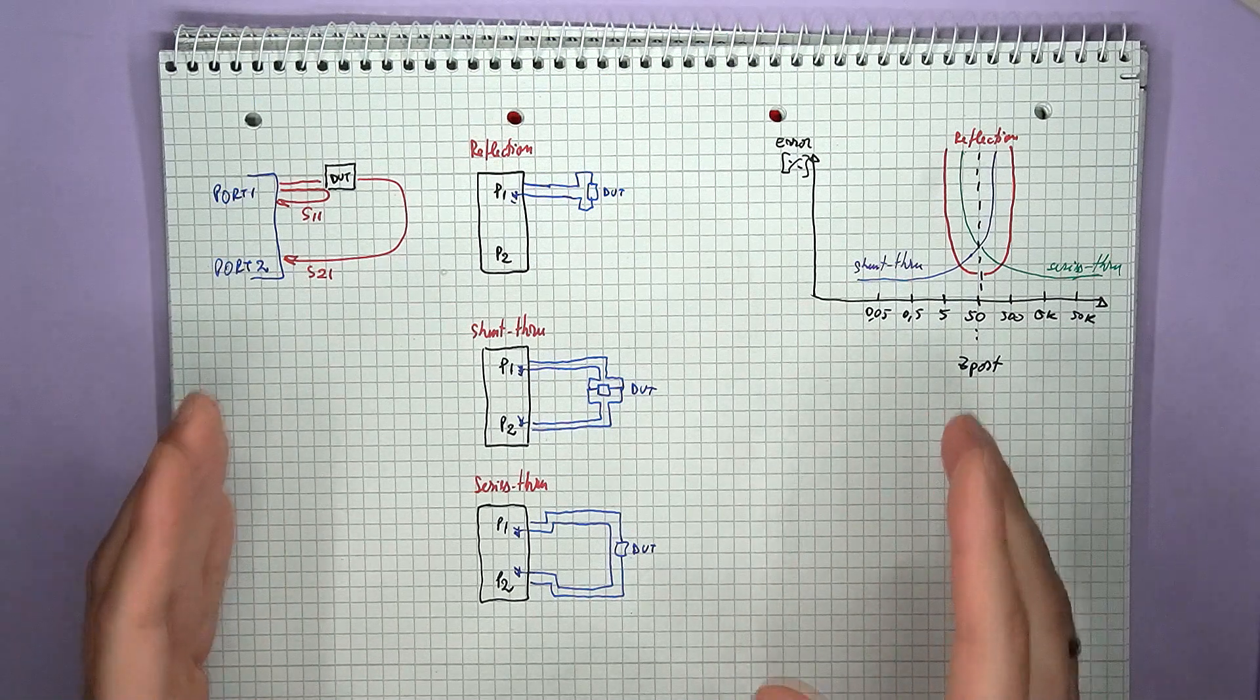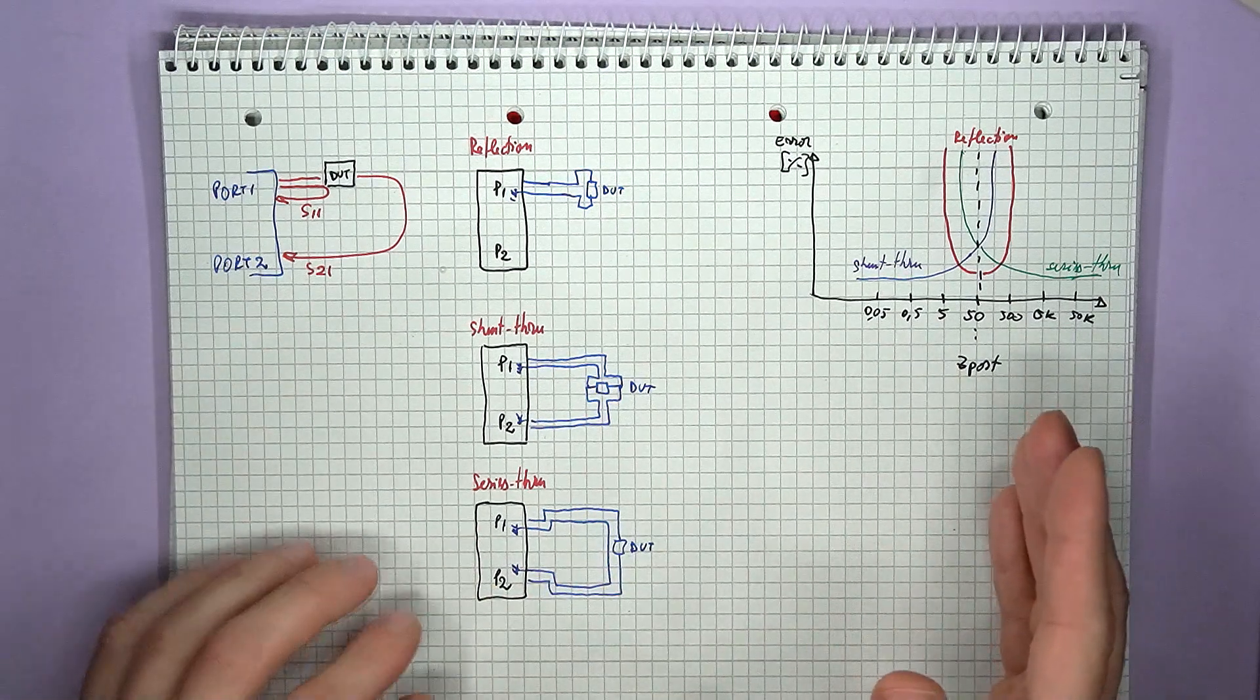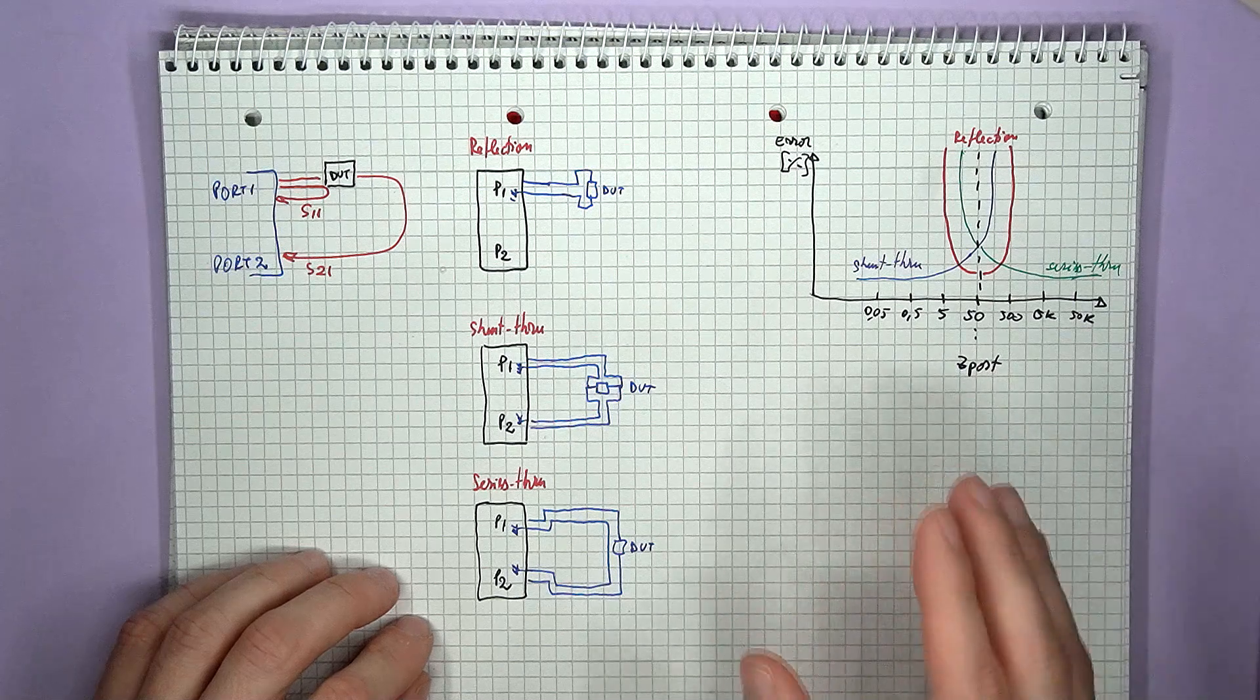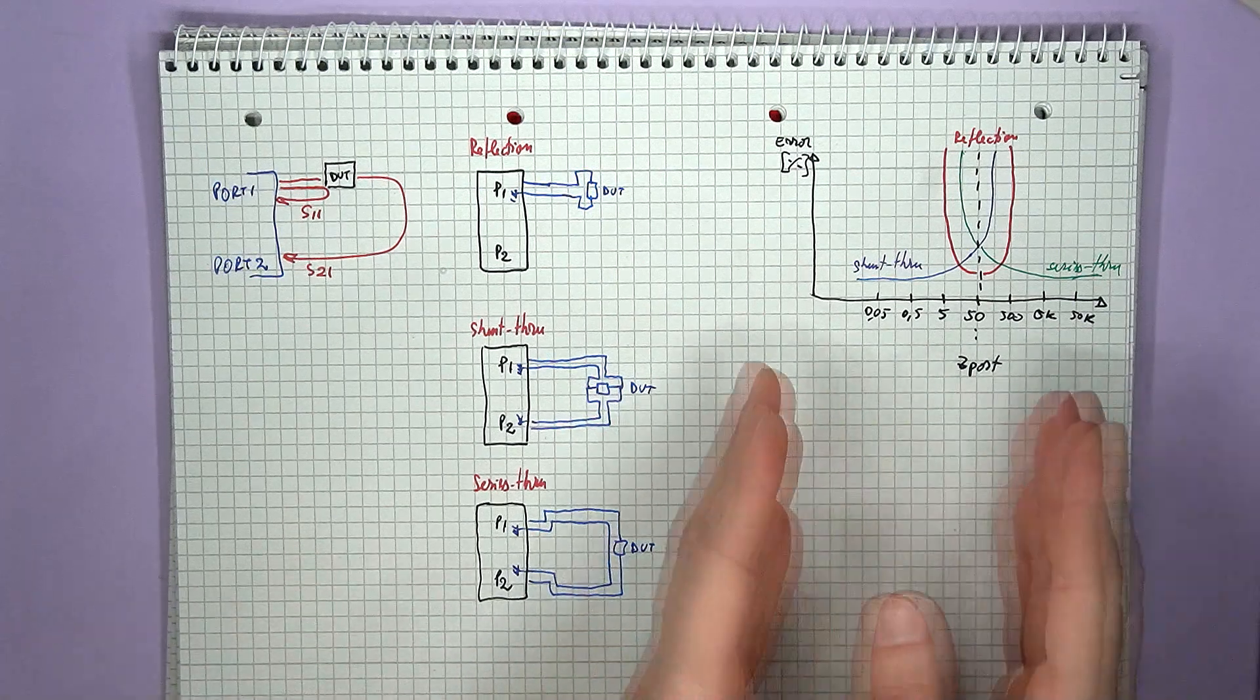Now, although any method will be able to measure any value, the smallest tolerances in the results are obtained when sticking to these three separate ranges.